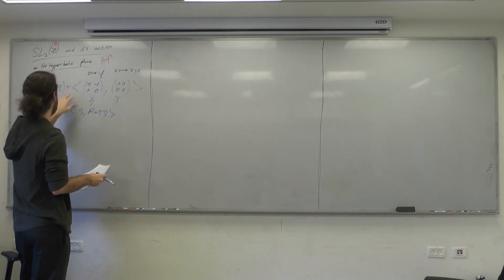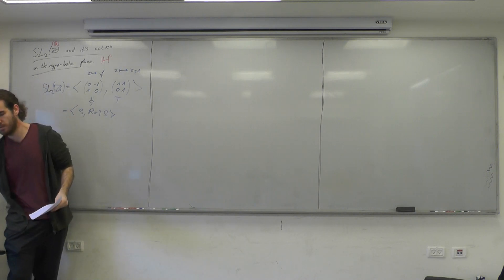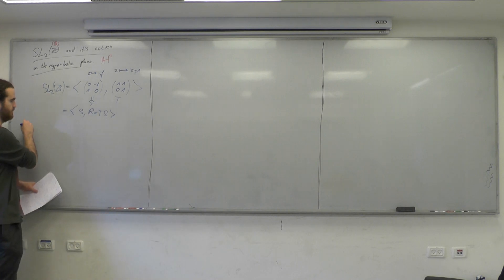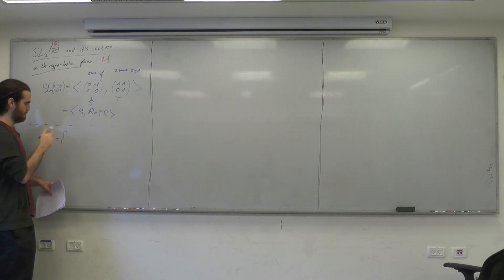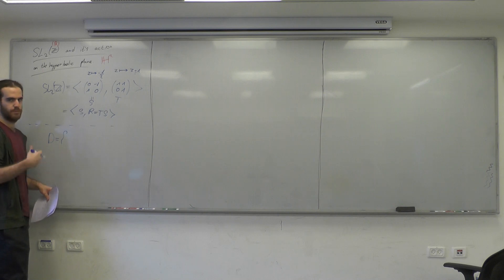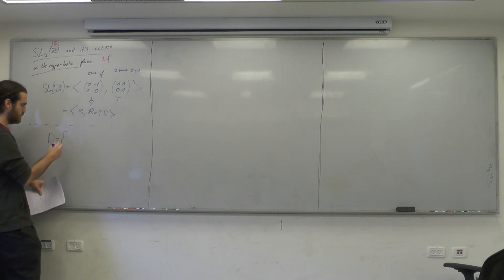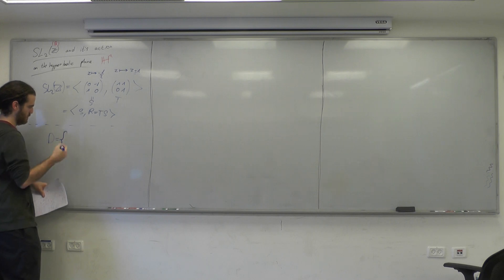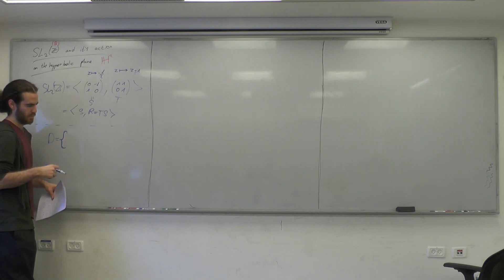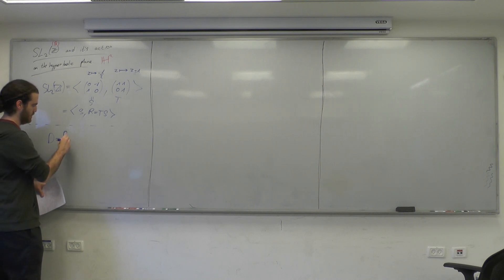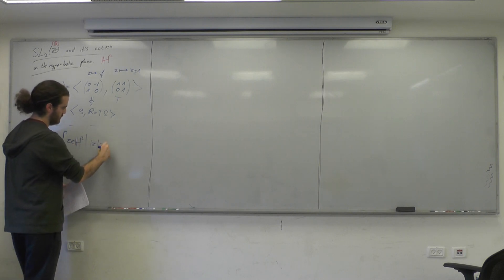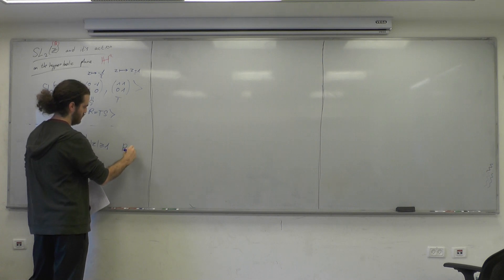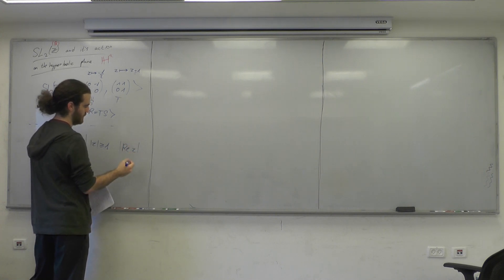The proof for this relied on the discussion that D, our fundamental domain, is a fundamental domain for PSL2Z. D is the set of Z in the upper half plane such that the absolute value of Z is greater than 1 and the real part is between minus half and half.